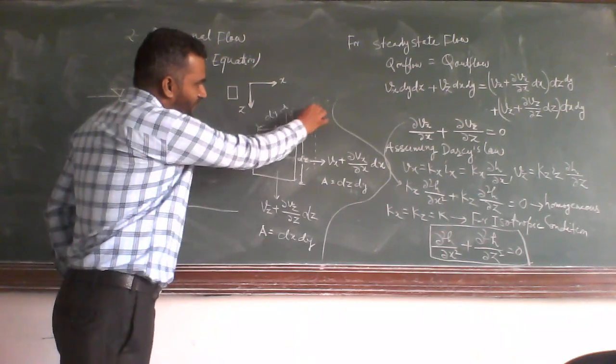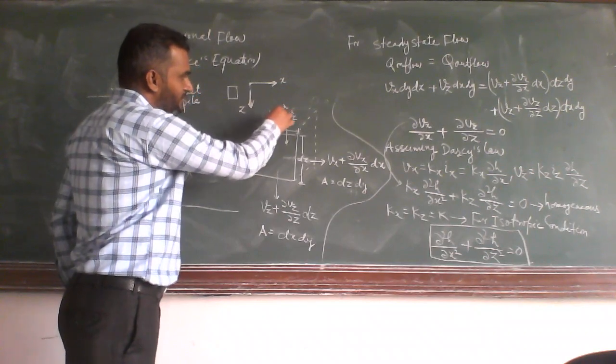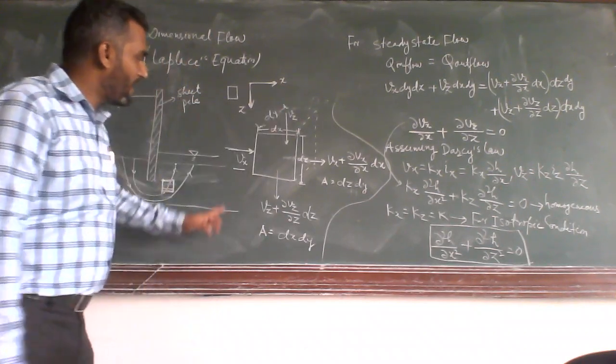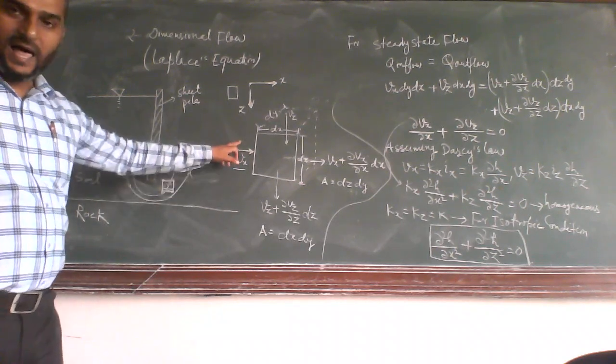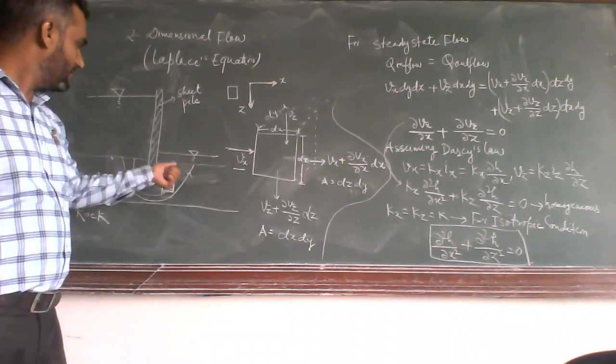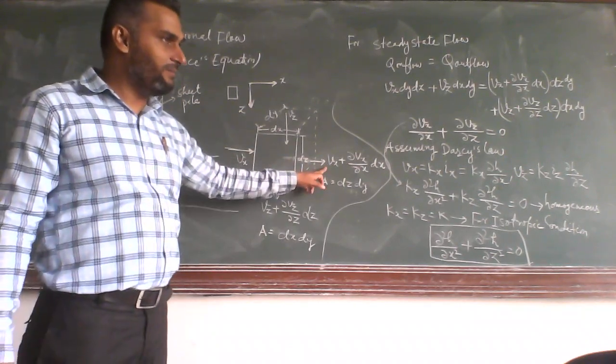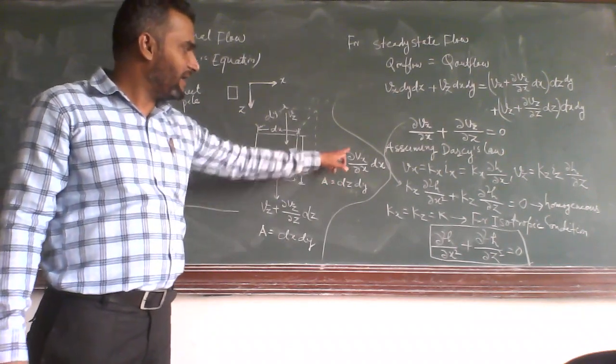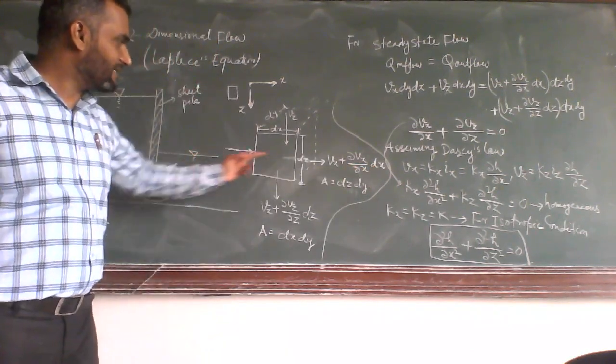And if you see the three dimension along this length, that is dy. Consider the velocity at inlet for this element is vx, then the velocity at outlet will be vx plus dvx by dx into dx in x direction.